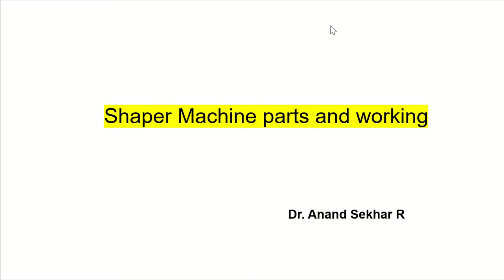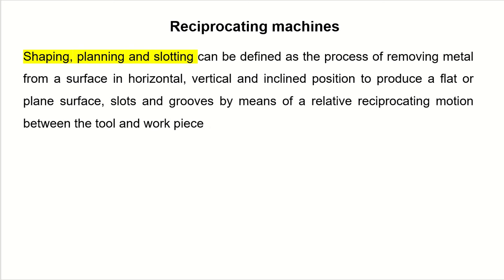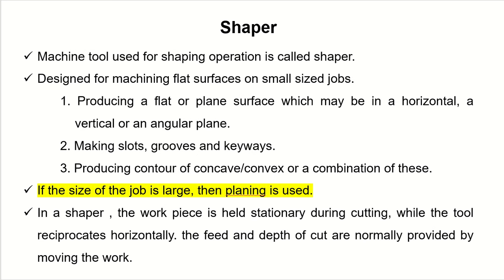The shaper reciprocates the tool so that the tool can do its job. That is why the shaper is called a reciprocating machine. Other machines in the same category are planing and slotting machines — shaping, planing, and slotting are all reciprocating machines. The shaper is basically used for producing flat or plane surfaces.